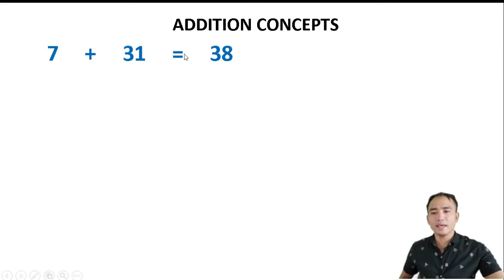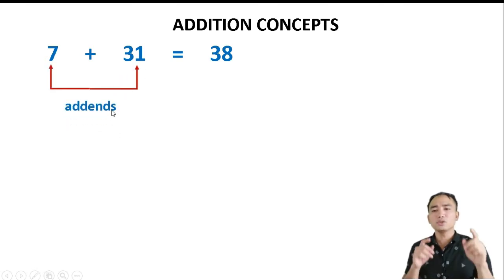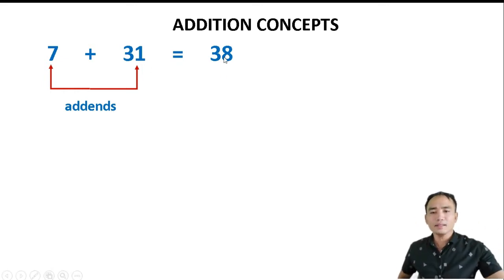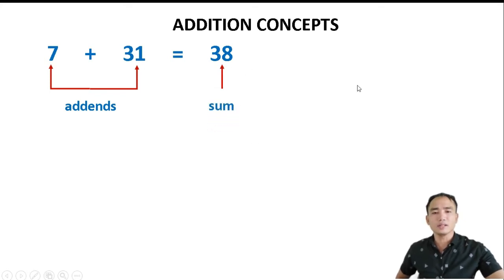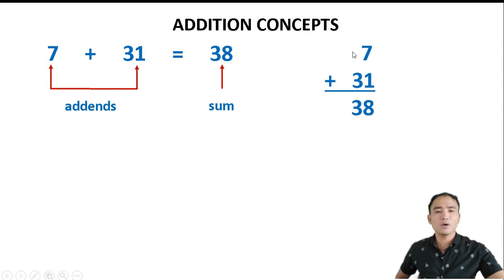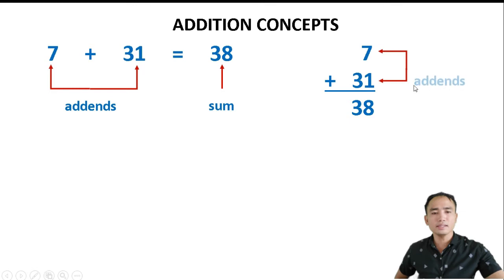7 and 31 are our addends. When we say addends, these are the two numbers that are added together. And 38 is our sum — the sum is the answer in addition. We can also rewrite that in vertical form: 7 plus 31 equals 38, where 7 and 31 are the addends and 38 is the sum.